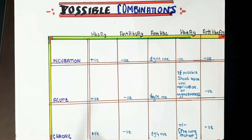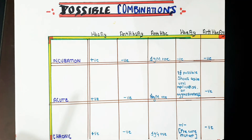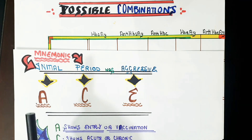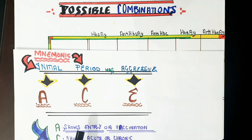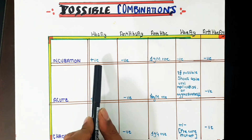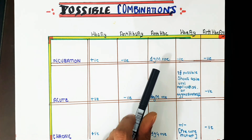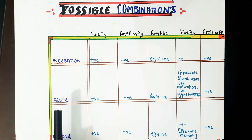During the incubation period the virus is dormant — only HBs antigen is positive, indicating the virus has entered the body as per our mnemonic. Anti-HBc can be of the IgM or IgG variety; in the incubation period, the IgM variety is positive.